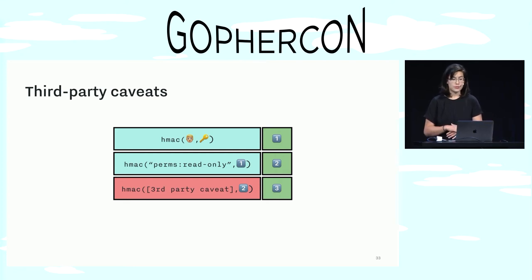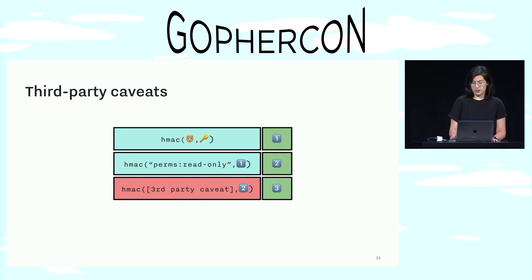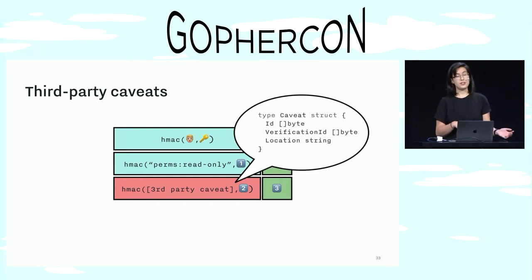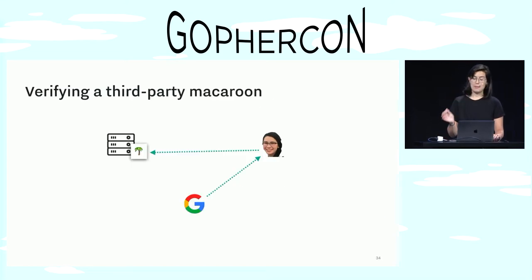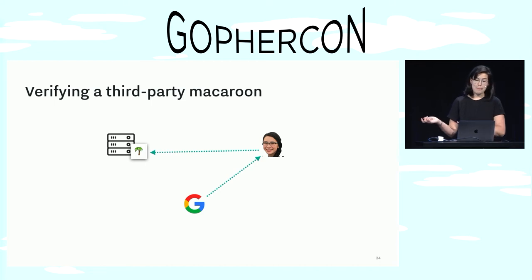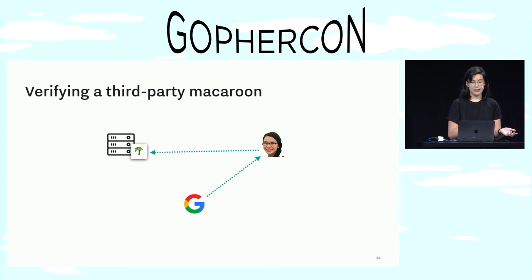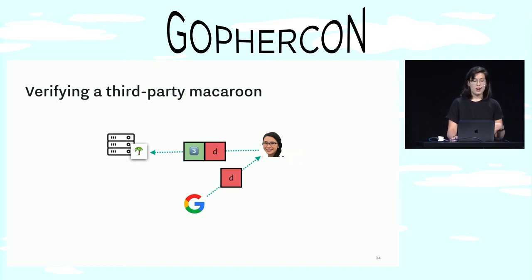But there are a couple of twists here. The first twist happens when the caveat is being added: the third-party needs to know the caveat's ID and verification ID so that it knows how to satisfy or discharge it. The other twist happens when it's being verified. In order to verify a macaroon with a third-party caveat, the third-party caveat has to be discharged by another macaroon called the discharge macaroon, which comes from the third-party itself. So my sister can fetch the discharge macaroon from Google and pass it along with her original macaroon to the target service, although the target service could also retrieve the discharge macaroon itself.